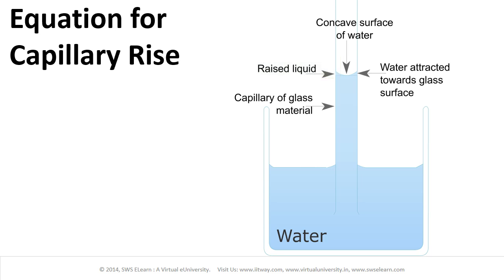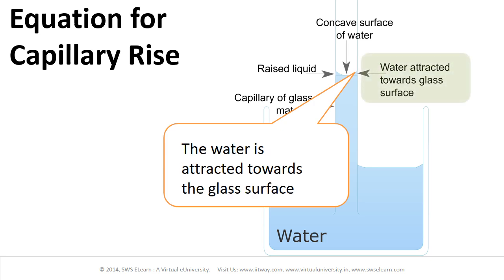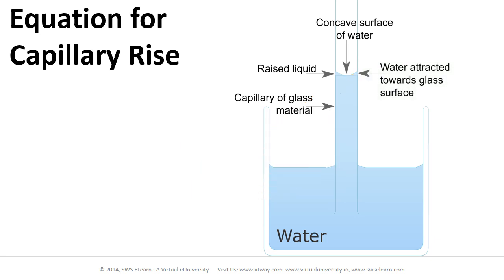For example, let us consider that the liquid is water and the capillary tube is made of glass. As the forces of adhesion are stronger than the forces of cohesion, the water is attracted towards the glass surface. Because of the surface tension of water, the water is also pulled upwards. The surface of water in a capillary tube is concave in nature.